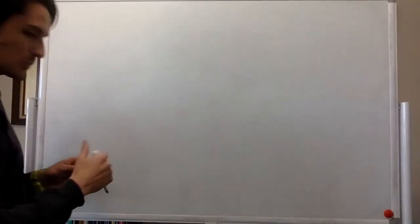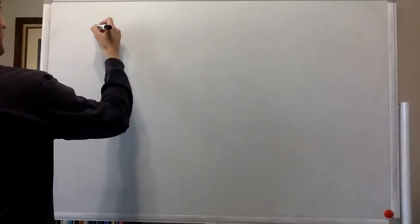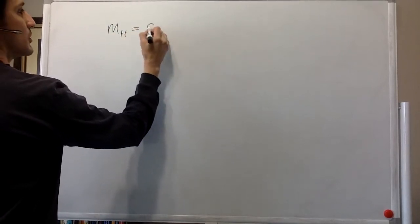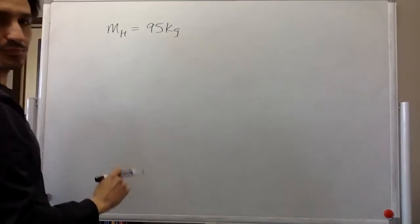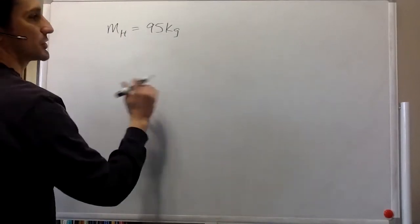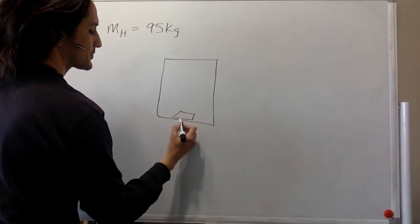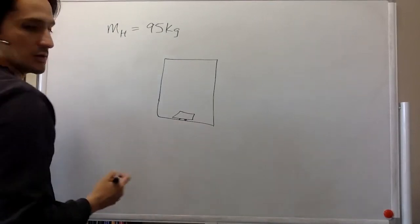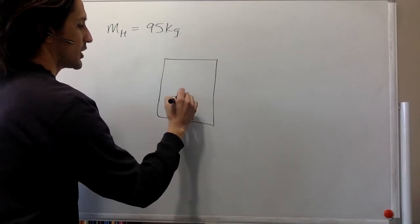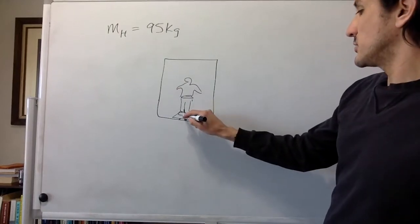Hello everybody. This problem is about Henry. So Henry, even though he doesn't want us to know, has a mass of 95 kilograms. And he stands — he's also a little bit weird — so he's in an elevator. And in the elevator, there's a bathroom scale, and he's on the scale. We can see the reading over here.